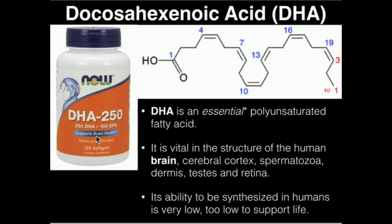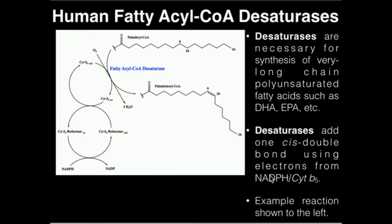We say it supports brain health, but it does a lot more than that. DHA is vital in the structure of the human brain, the cerebral cortex, spermatozoa, sperm cells, the dermis, testes, and the retina. DHA is generally considered an essential fatty acid. Humans can synthesize it, but in too little levels to actually support quality life. We have to get DHA through the diet directly, or get something through the diet that we can convert to DHA, which we'll cover in a separate video on biosynthesis. If we did not get any dietary DHA, we would be in big trouble from an inflammatory perspective, because DHA is strongly anti-inflammatory.